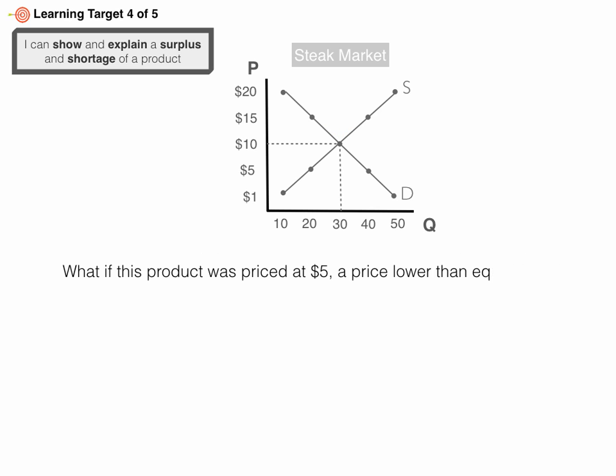Now let's say this product was priced at $5, a price lower than equilibrium. What type of situation occurs? If the equilibrium price is $10 and the product is at $5, quantity demanded would be 40. Forty people would want to buy steak, or 40 steaks would be bought.